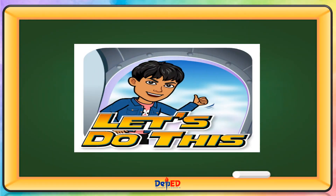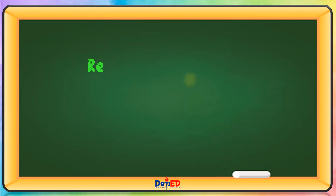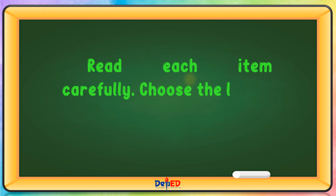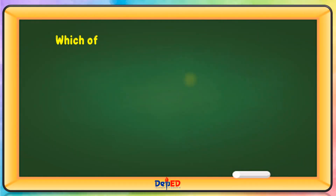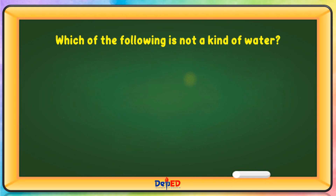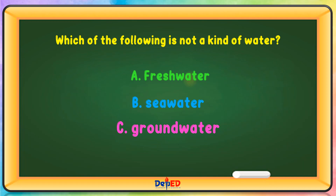Let's do this. Read each item carefully. Choose the letter of your answer. Which of the following is not a kind of water? A. Fresh water. B. Sea water. C. Ground water. D. Water vapor. The correct answer is D.